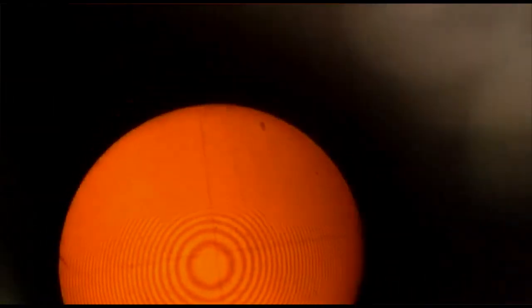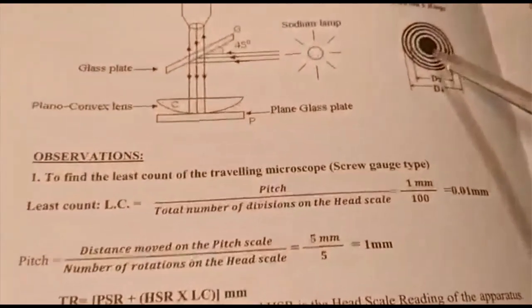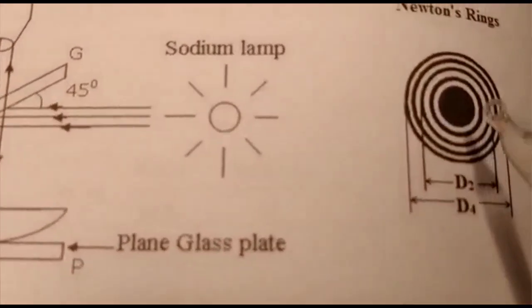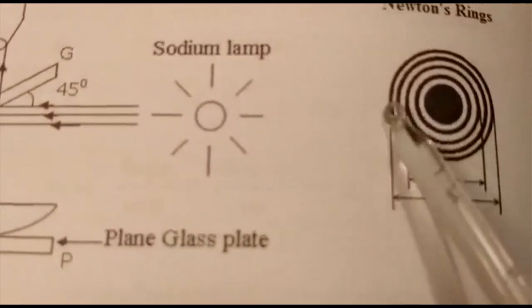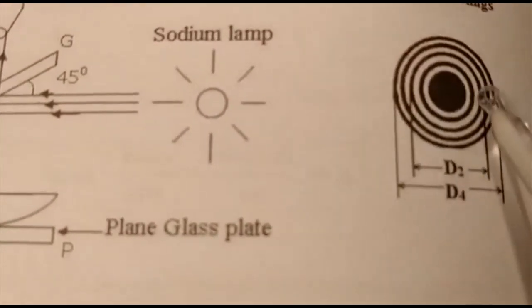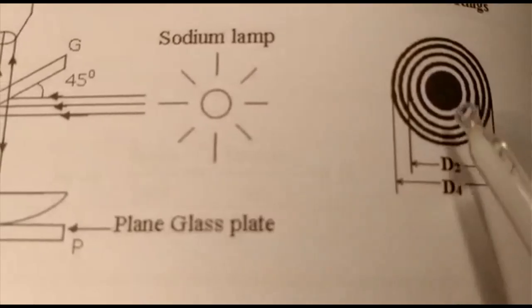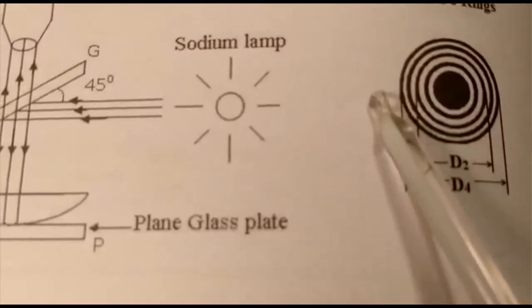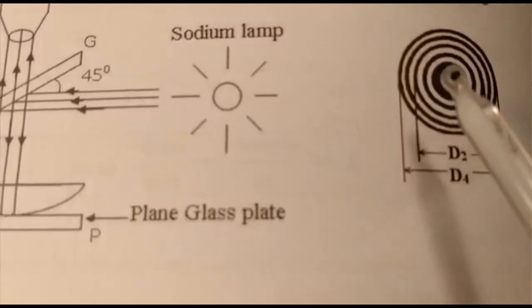If you observe the tabular column, this is the Newton's Rings setup. The dark central ring is at the center. The left side readings go 12, 10, 8, 4, 2, and similarly you move to the right side: 2, 4, 6, 8, 10, 12.